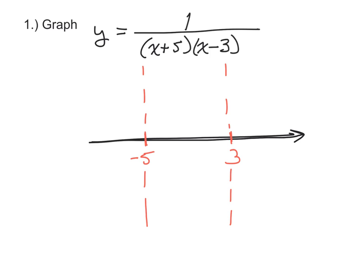We've now broken the x-axis into three intervals, and the next step is to test each one. Pick a number way out to the left — like negative a billion. No matter what x is, 1 is always positive. Negative a billion plus 5 is negative, and negative a billion minus 3 is also negative. So the fraction is positive divided by a negative times a negative, which is positive divided by positive — overall positive.